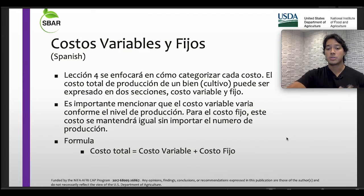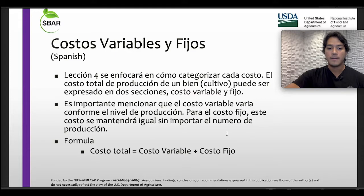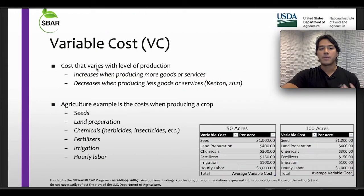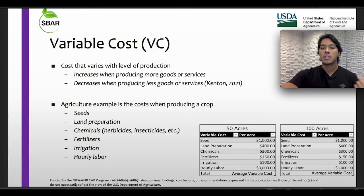Variable cost is a cost that varies with the level of production. It increases when producing more goods or services. On the other hand, it is going to decrease when producing less goods or services.